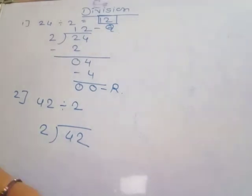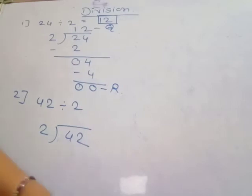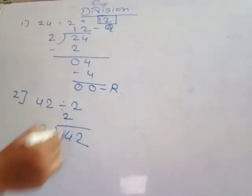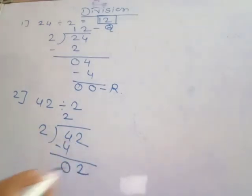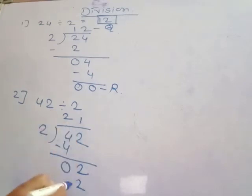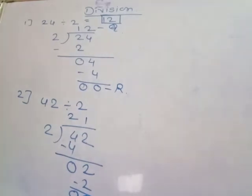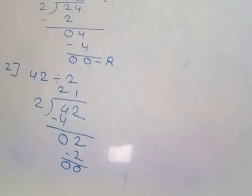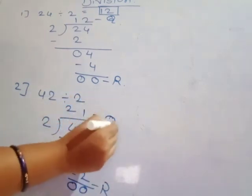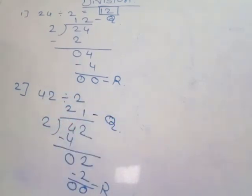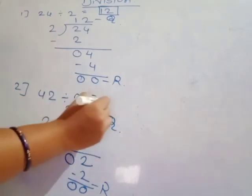See here the two times table. In the two times table, 4 is there: two ones are two, two twos are four. Then 4 minus 4 equals zero. Take the unit's place number 2. Again count the two times table: two ones are two. Zero remainder. The quotient is 21. So 42 divided by 2 is equal to 21.